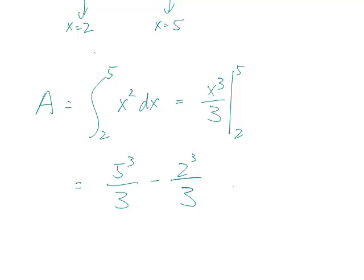Five cubed is 125 minus 8 over 3, so this area is going to be 117 over 3, whatever units this is in. We're not given any units, so we'll just leave it as 117 over 3.